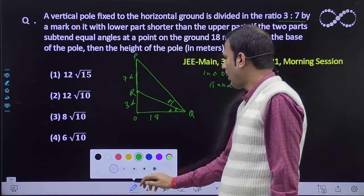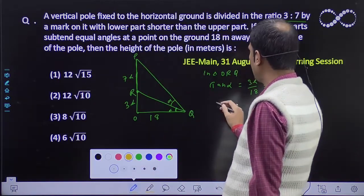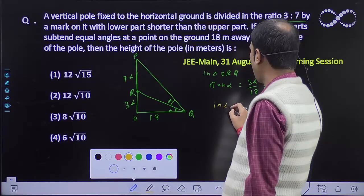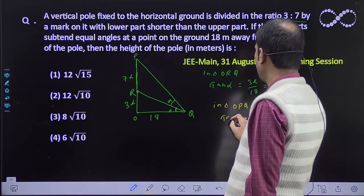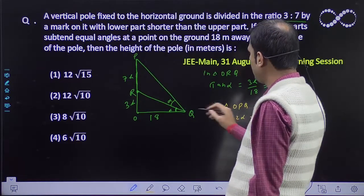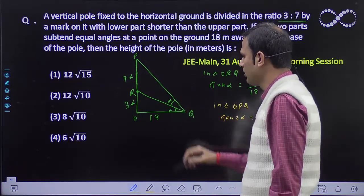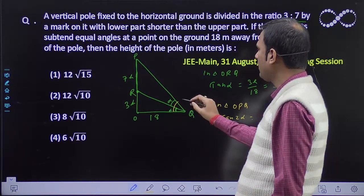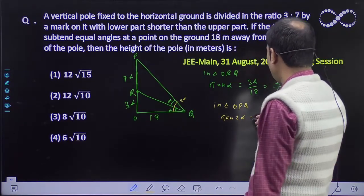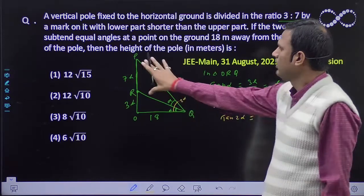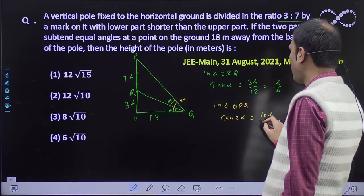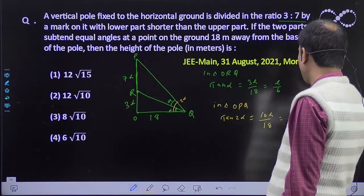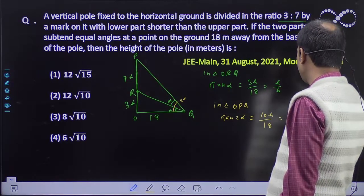This is tan alpha. Now for the bigger triangle, in triangle OPQ, if we take it, what do we get? tan 2 alpha. The total angle becomes 2 alpha. The total angle is 2 alpha. So what is the value of tan 2 alpha? In the bigger one, perpendicular by base, that is 10h upon 18. So this becomes 5h upon 9.